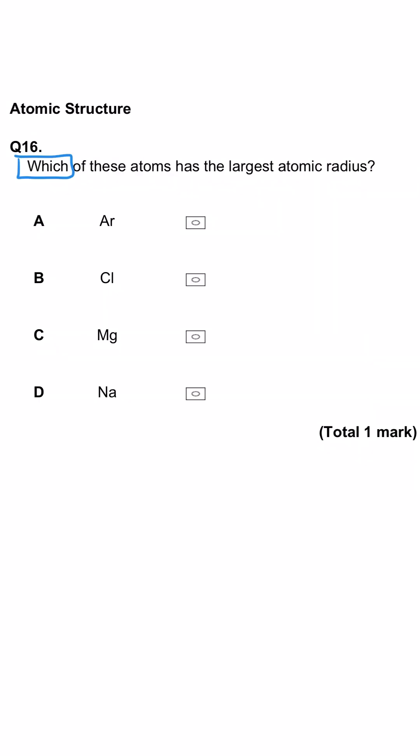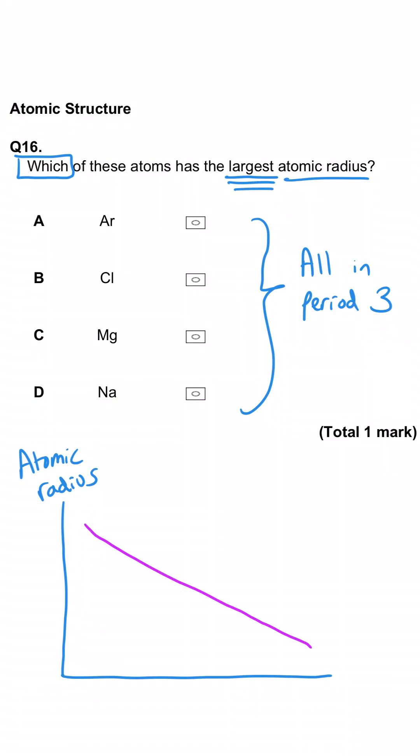This question is asking us which of these atoms has got the largest atomic radius. Important to note that they are all in period 3. And all the elements in period 3 have a smaller atomic radius as you work your way to the right-hand side. So sodium, being the first element we encounter in period 3, will have the larger atomic radius. Magnesium will be just next in line, argon will be furthest to the right, and chlorine just before it. So sodium, definitely. Nice quick question.